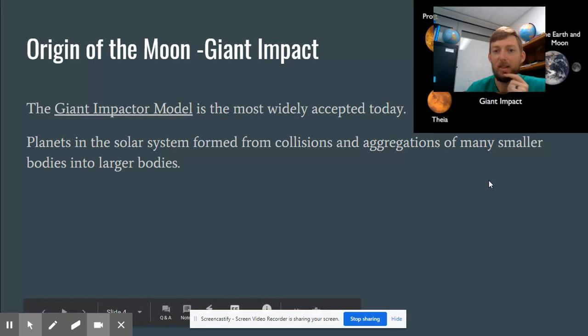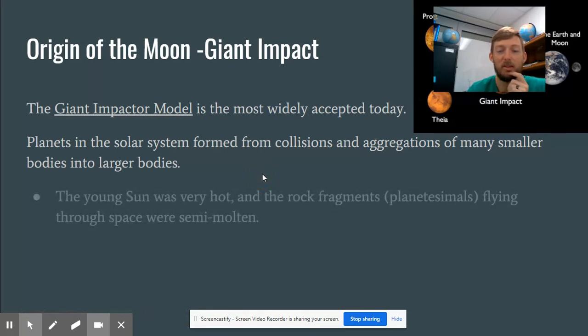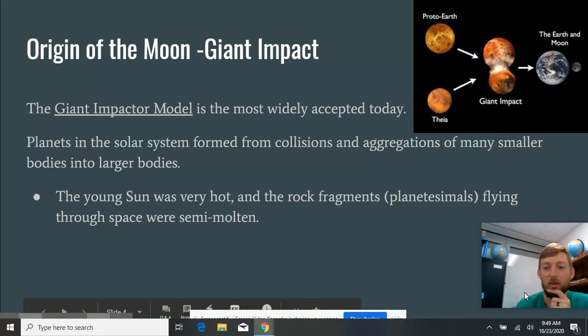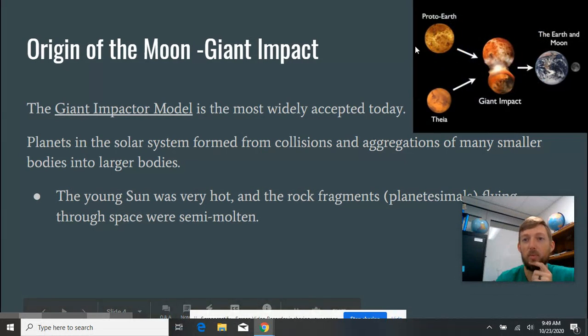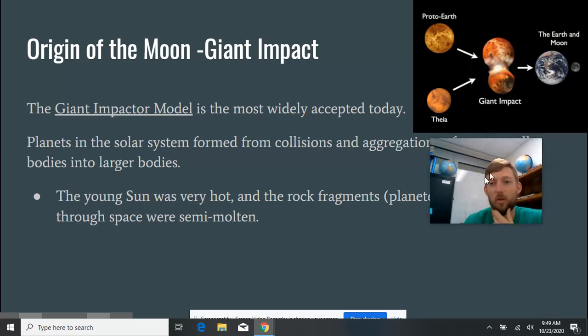And so after that collision, the aggregations of many smaller bodies into larger bodies. And so you can see from the graphic up here, we have the proto-Earth, which is like the Earth when it was still a lot of magma, a lot of moving around, not fully formed. And we have this other body, Thea, that then collide. And so then from that collision, some stuff still flies off, which forms the moon, and then some stuff stays, which eventually formed the Earth.